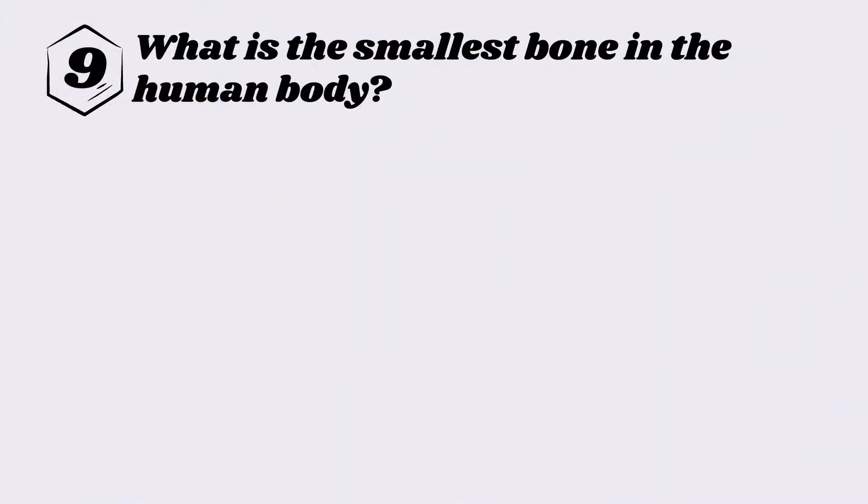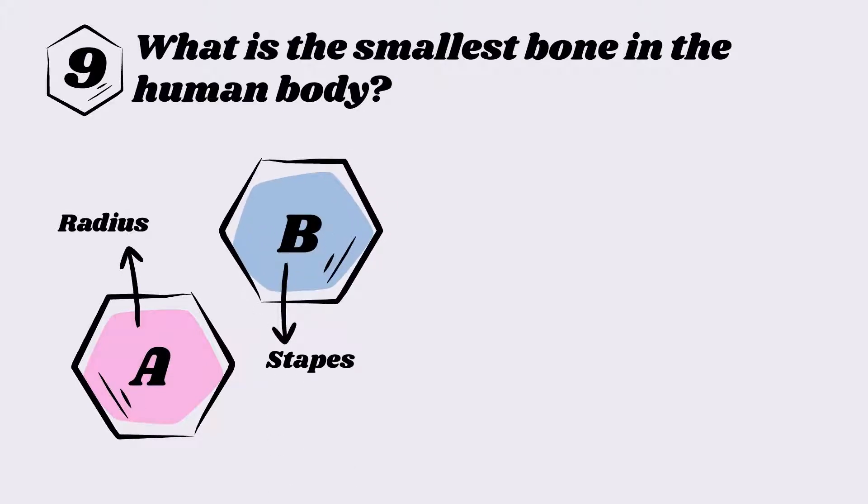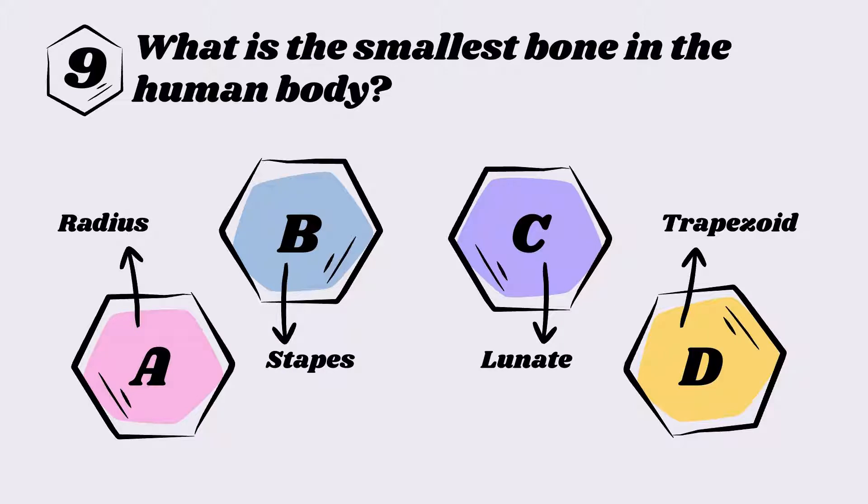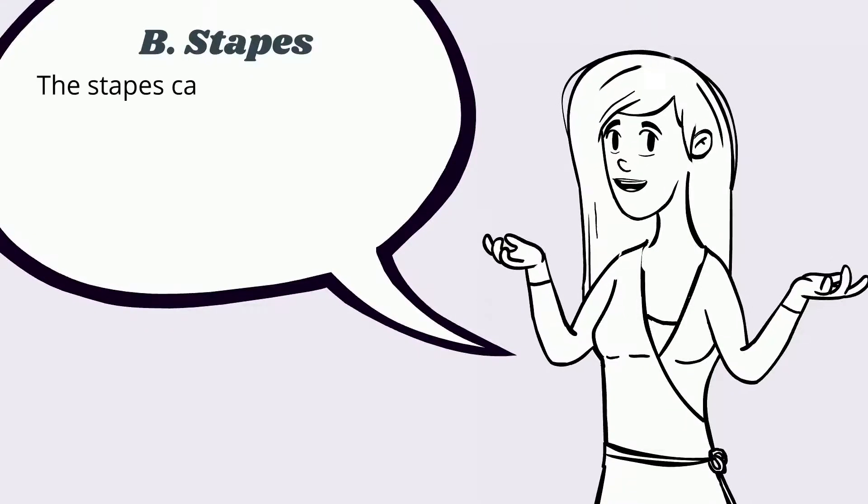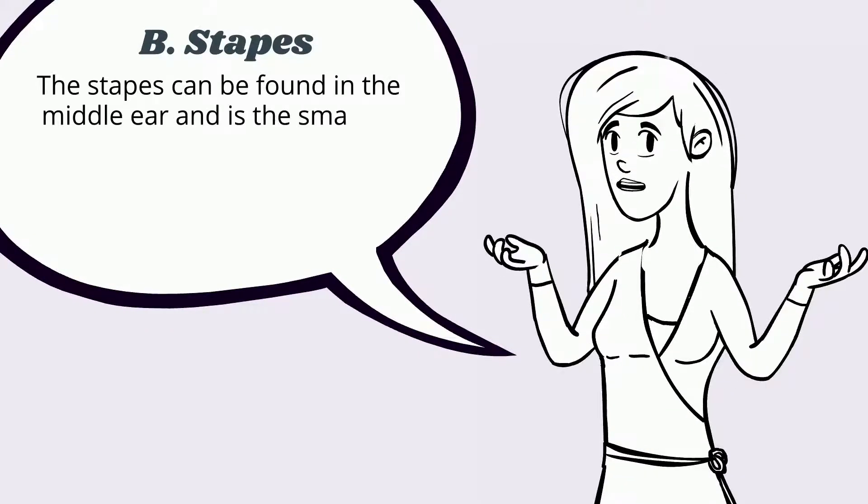Question nine: What is the smallest bone in the human body? A) Radius, B) Stapes, C) Lunate, D) Trapezoid. The answer is B, stapes. The stapes can be found in the middle ear and is the smallest and lightest bone in the human body.